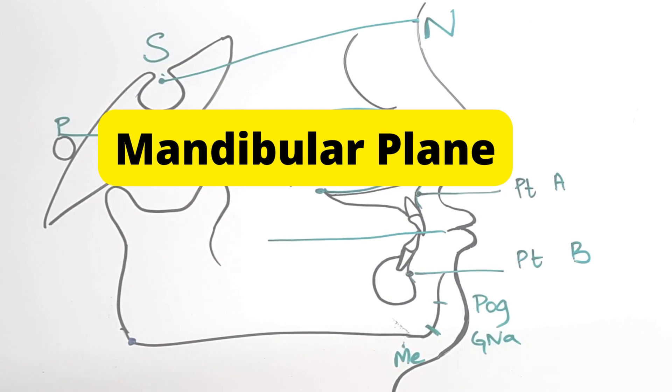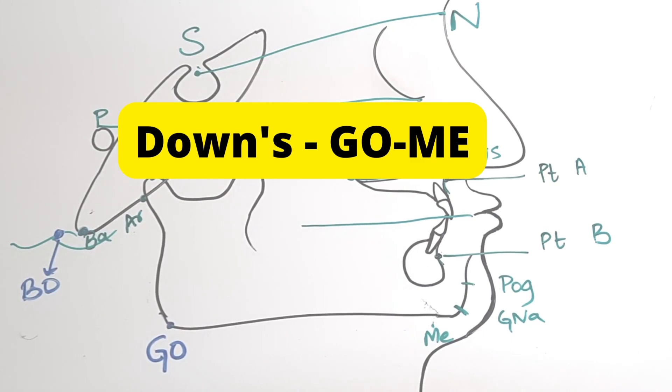Lastly, we have the mandibular plane. Now, this plane is different for each analysis. For Down's, it's gonion to menton, so it's GO-ME.